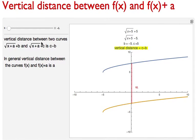So now, the vertical distance between two curves, square root of x plus a plus b and square root of x plus a plus c is c minus a. The vertical shift is c minus a.